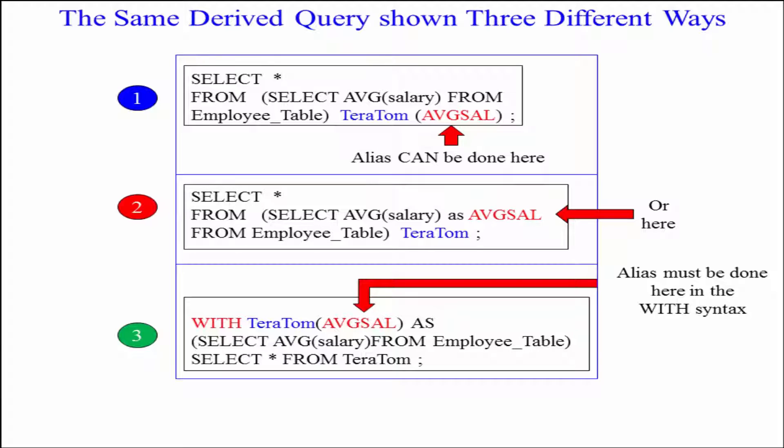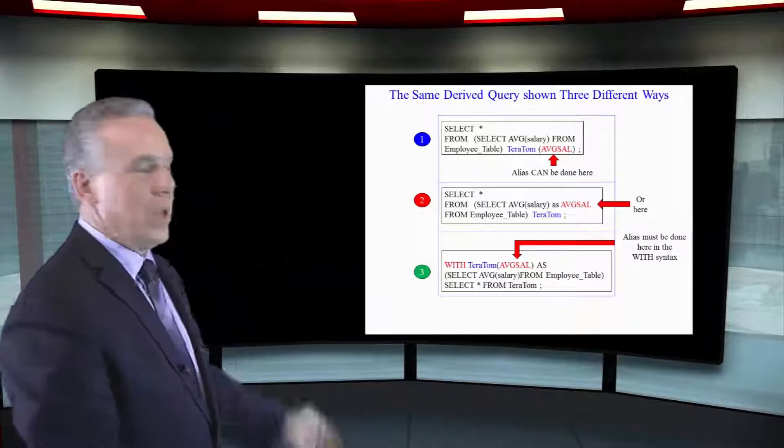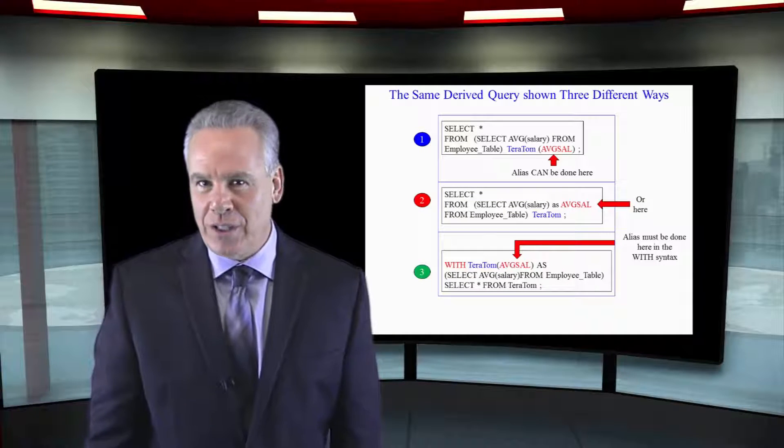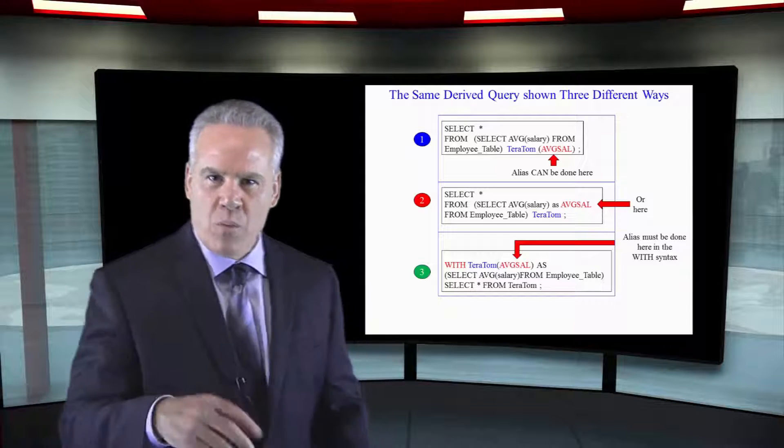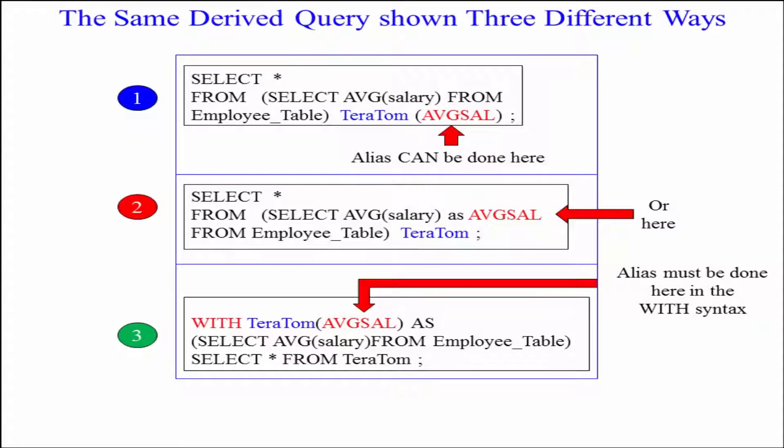Most of the time, your derived tables are joined with other tables, but not always, and not in these examples here. So let's take a look at these. First of all, we're going to select everything from, and we go timeout.